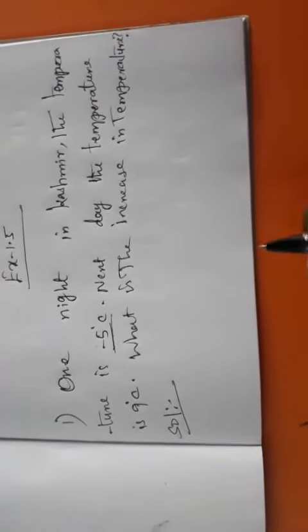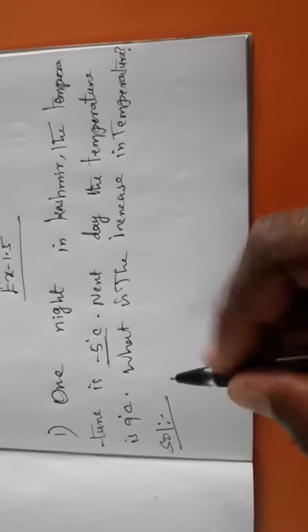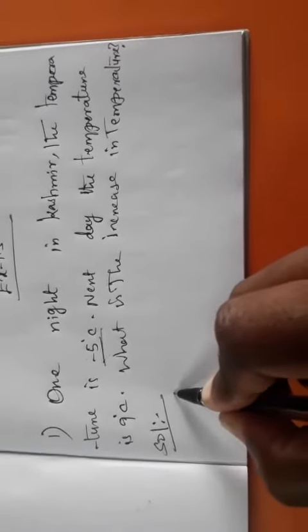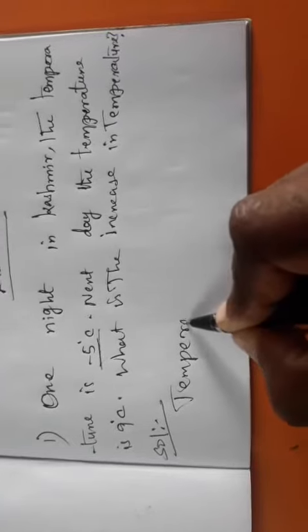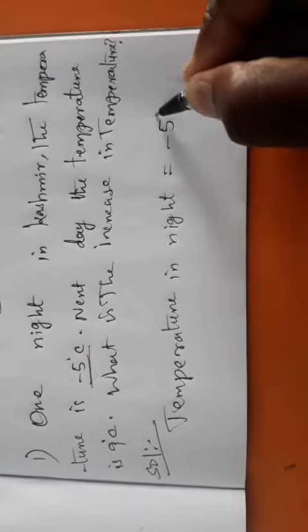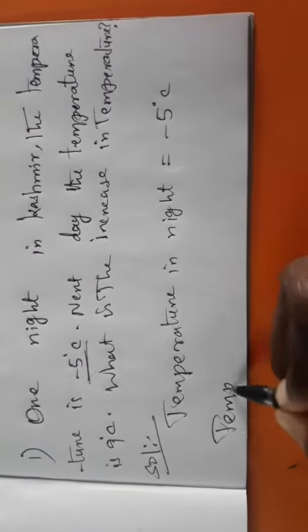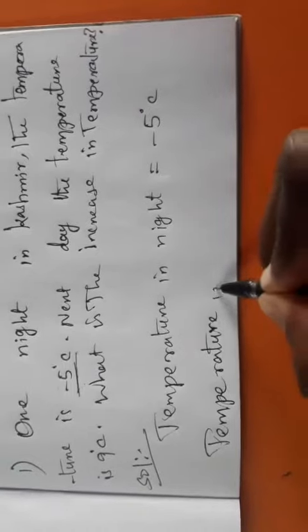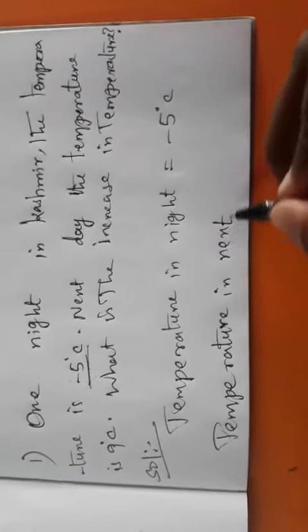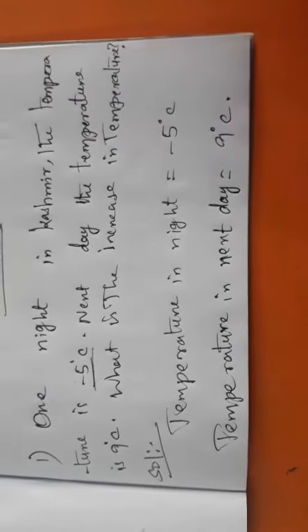So from night to next day the temperature changes — it increases. First, take the given conditions. Temperature in night is minus 5 degree Celsius. Temperature in next day is 9 degree Celsius, as given in the question. We want to find what is the temperature increase.